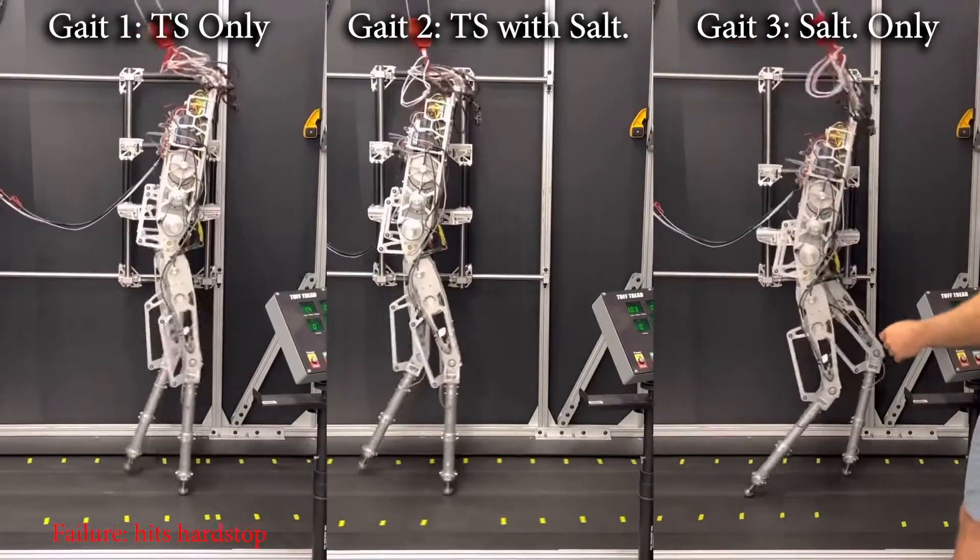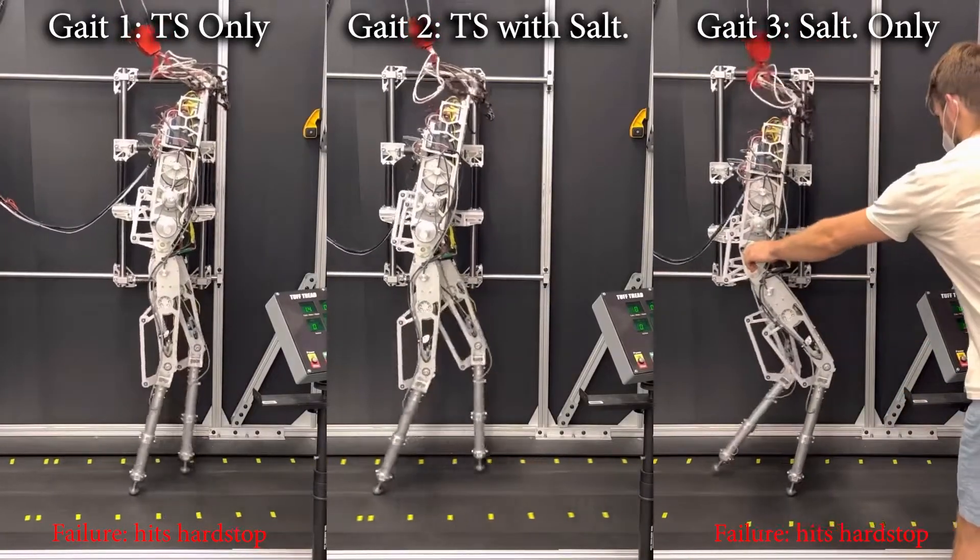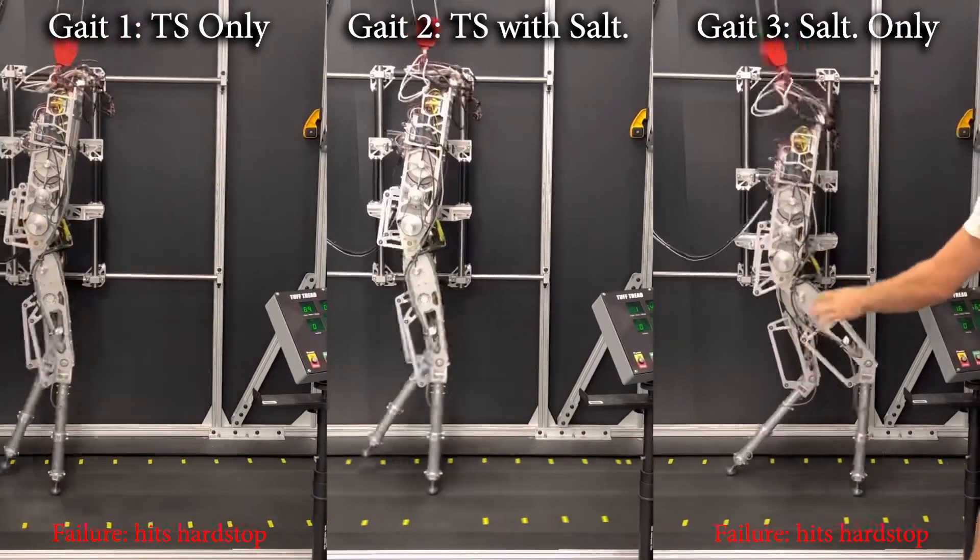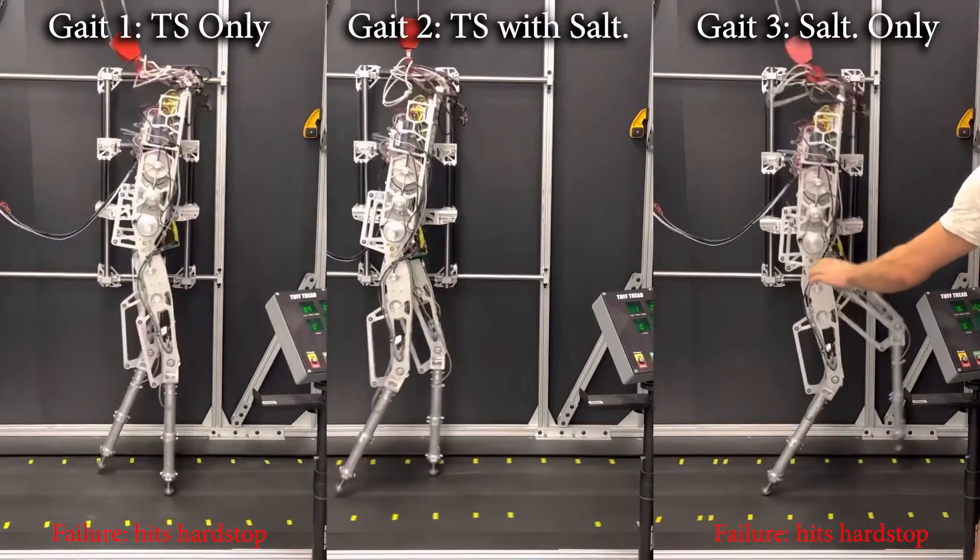Next, the same gaits are demonstrated on hardware. Surprisingly, while the gait generated with only the saltation matrix was successful in simulation, it failed on hardware due to large torque requirements and high impacts.